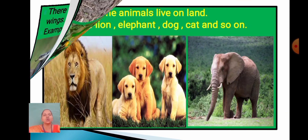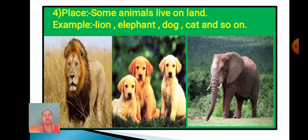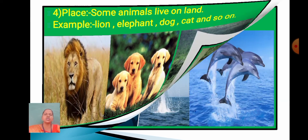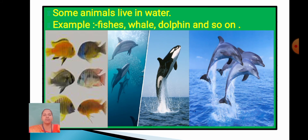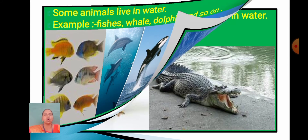Now we are going to learn about animals on the basis of the places they live. Some animals live on land — they are called land animals. For example, lion, elephant, dog, cat, and so on. Some animals live in water. For example, fish, whale, dolphin, and so on.